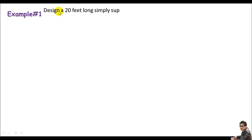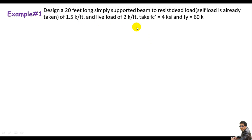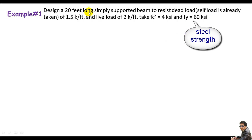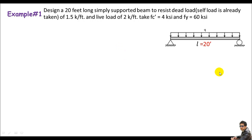Example one: design a 20-foot long simply supported beam to resist a dead load of 1.5 kips/ft and a live load of 2 kips/ft. fc' is 4 ksi and fy is 60 ksi. The beam is simply supported with a UDL. Note that the self-weight of the beam is already accounted for in the dead load, so we will not include it separately in the calculations.